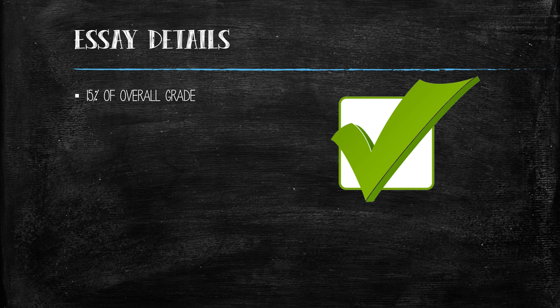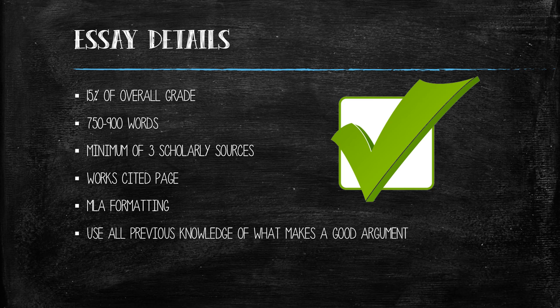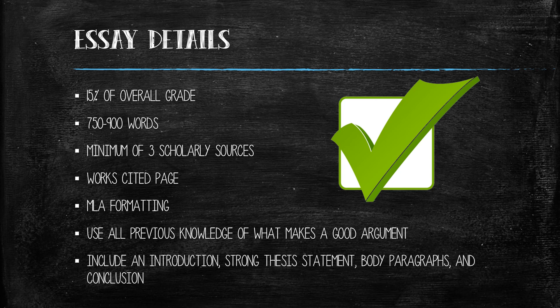This essay is worth 15% of your overall grade for this course and should consist of a minimum of 750 words, but no more than 900. You will need to incorporate at least three scholarly sources from the library or online databases into your essay and include a works cited page, all in proper MLA formatting. You will want to use the knowledge that you have gained thus far regarding the components that make a good argument. Be sure to include an introduction, a strong thesis statement, body paragraphs, and a crisp conclusion. Direct any other questions you may have to me by email or by using the discussion board. And, as always, have a great week!